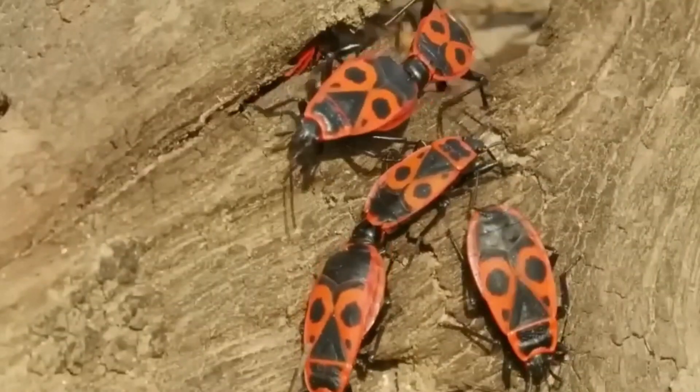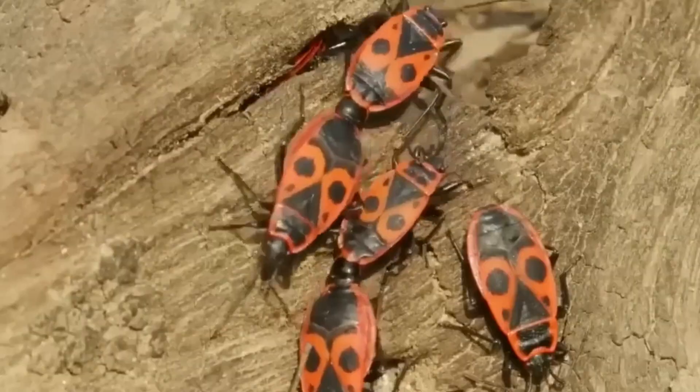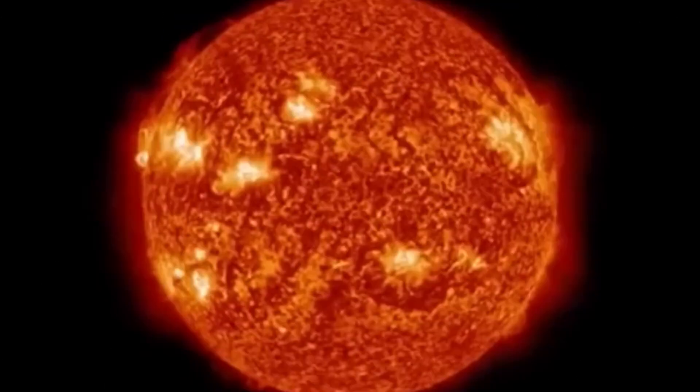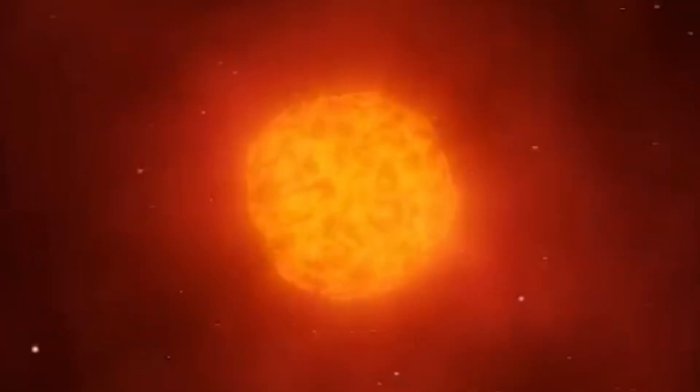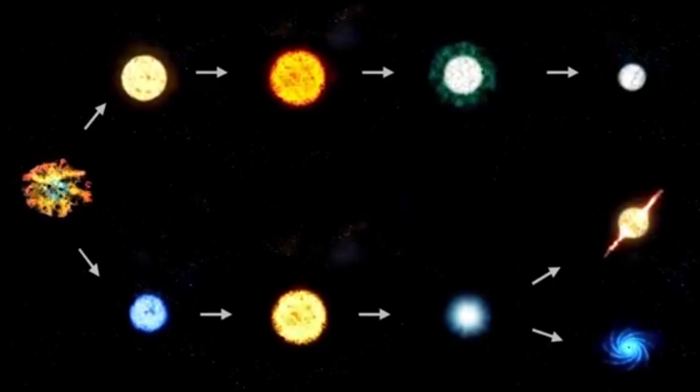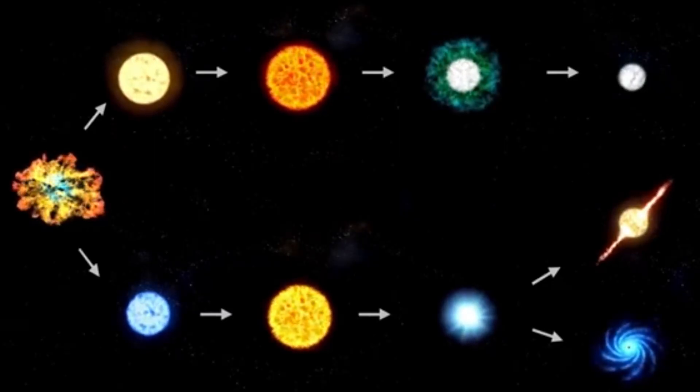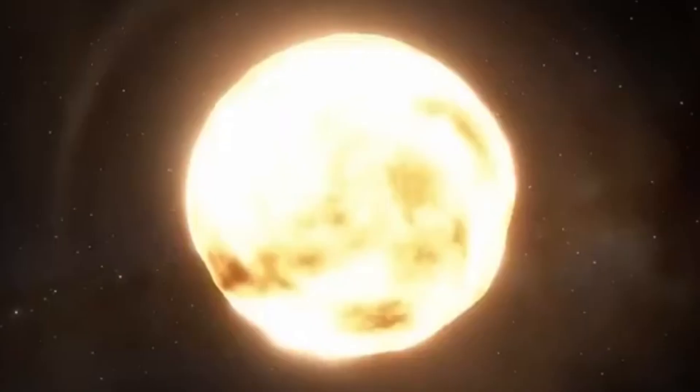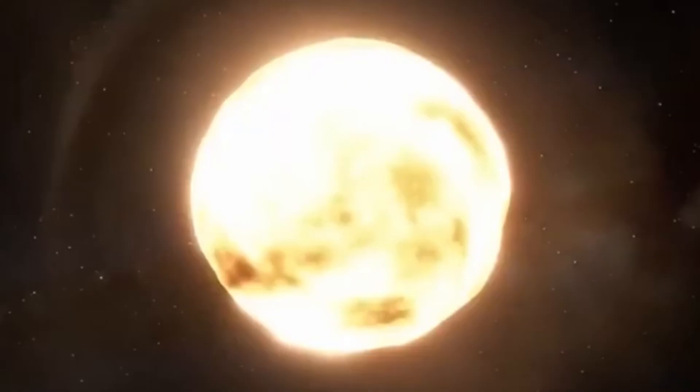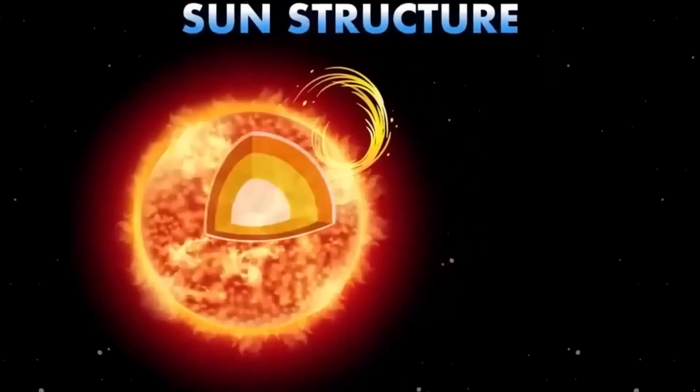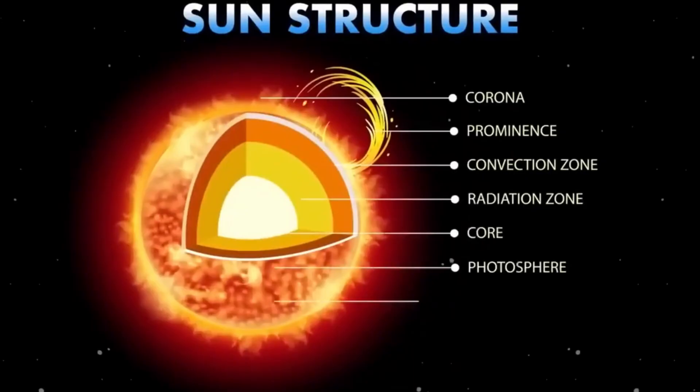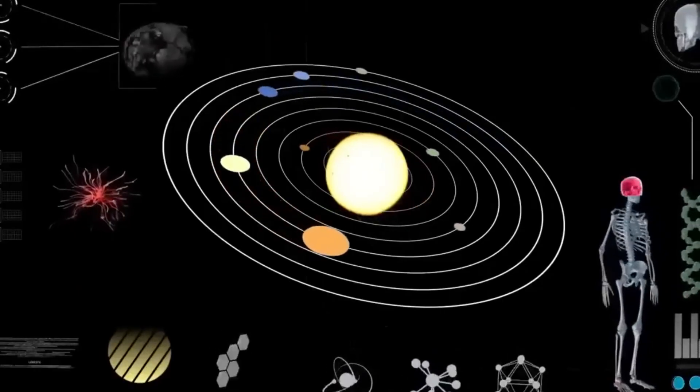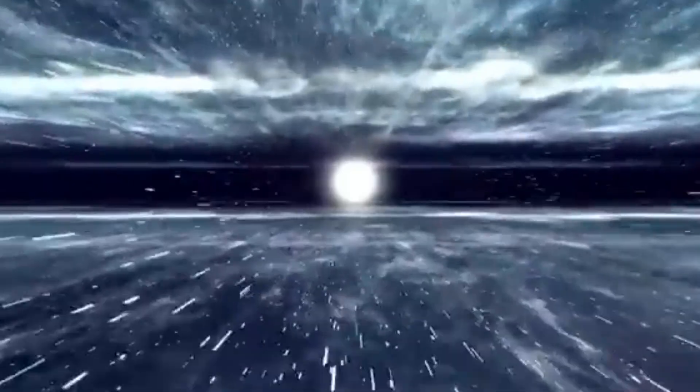Scientists estimate that when Betelgeuse goes supernova, it could become as bright as the full moon, or maybe even brighter. Picture this: you're outside on what should be a dark night, but there's this incredible star shining so brightly that it's casting shadows on the ground. You can see colors that you normally couldn't see at night. You can read a newspaper by starlight. The star would be visible even during the day, appearing as a bright point of light next to the sun. This spectacular light show would continue for weeks or even months before slowly fading away.